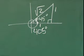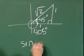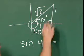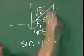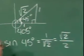So now what we want is the sine of 45 degrees, which equals the opposite over the hypotenuse, which when we rationalize would be the square root of two over two.